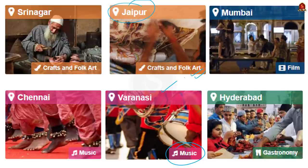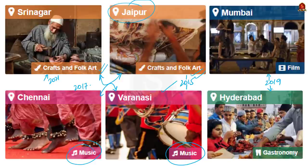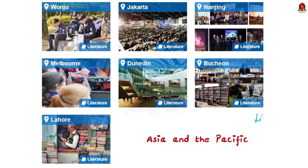Chennai became the creative city of music in 2017. In 2019, Hyderabad became part of the Creative Cities Network in the gastronomy category, and Mumbai was designated as a creative city in the film category. In 2021, Srinagar was recognized as the creative city of crafts and folk art. So the six cities are Chennai, Varanasi, Jaipur, Hyderabad, Mumbai, and Srinagar. Under crafts and folk arts we have Jaipur and Srinagar; under music we have Varanasi and Chennai. The three remaining categories with no Indian city yet are literature, design, and media arts.